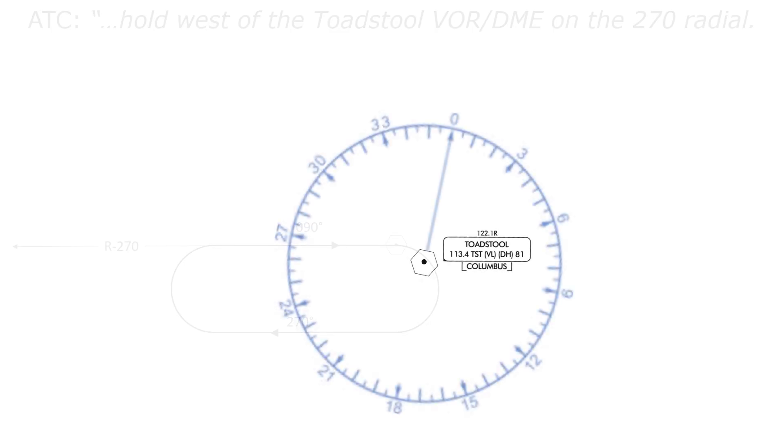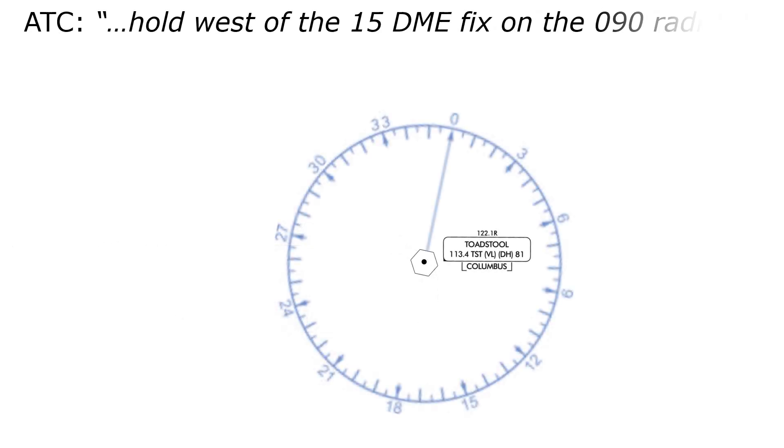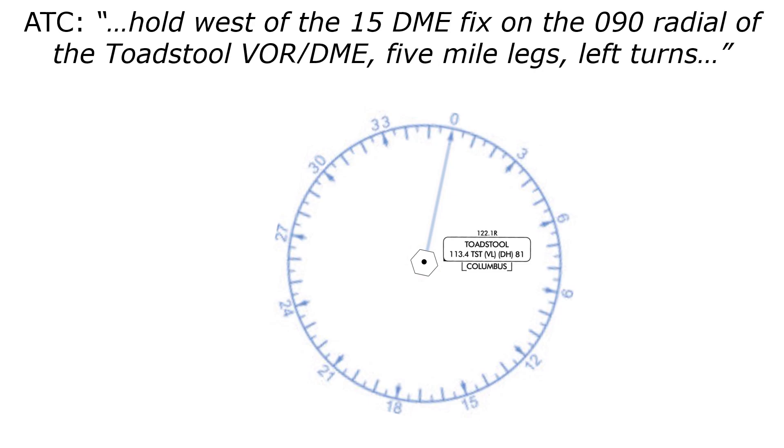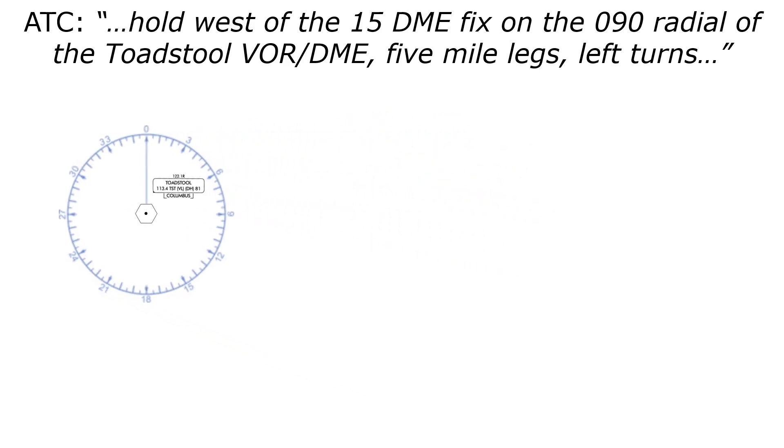Let's complicate things a bit. Hold west of the 1-5 DME fix on the 0-9-0 radial of the toadstool VOR DME, 5 mile legs, left turns. We're not holding on the VOR this time, but on a DME fix on a certain radial from it.